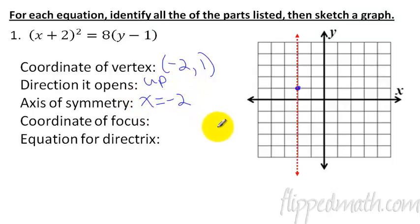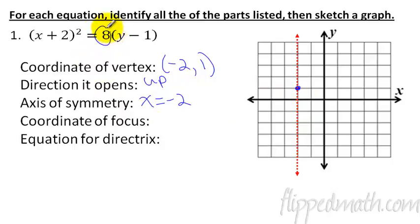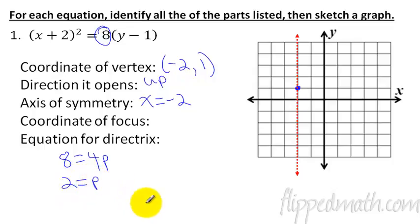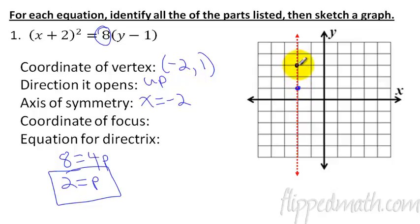Coordinate of the focus - in order to calculate that we need to know what p equals, because it's going to be p units away. Our number 8 is our 4p. So what is p equal? If we divide both sides by 4, then p equals 2. That's an important thing we need to do on each of these - know the distance p. So starting at the vertex, we know it opens up, so we go 1, 2 - there is the focus. The coordinate point of the focus is negative 2, 3.